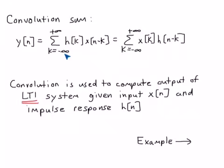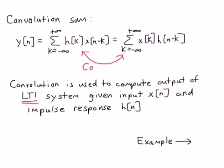Up here I've written two forms of the convolution sum. The first says that the output y of n is equal to the infinite sum of h of k times x of n minus k. The other version writes it as the infinite sum of x of k times h of n minus k. The reason we have these two different forms is that convolution is a commutative operation, so you can reverse the roles of h and x and get the same exact output.